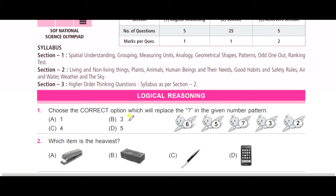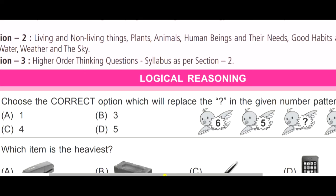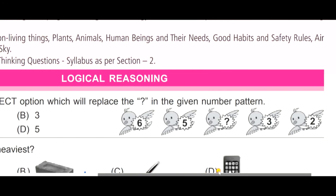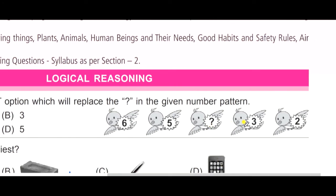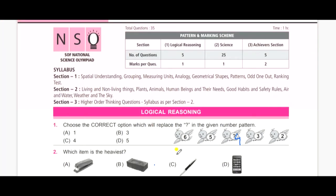A, 1, B, 3, C, 4 and D, 5. Now let's look at the number pattern. 6, 5, question mark, 3 and 2. So these all are the before numbers. 6, before that 5, before that, yes, you are right, it's 4. So the answer is 4.